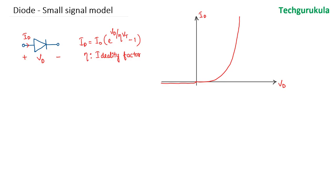In this video, we are going to see the PN junction diode small signal model. I have shown the diode symbol here where the voltage across the diode is VD, the current flowing through the diode is ID, and the diode current equation is shown here, where eta is called the ideality factor. We have seen this in electronic devices where we discussed in detail the current-voltage characteristics of the PN junction diode.